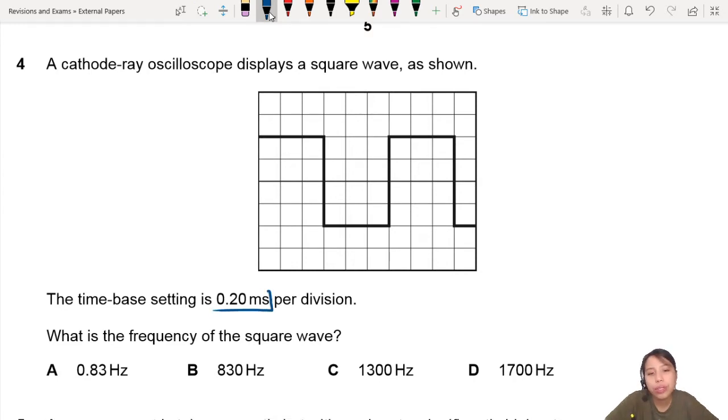This 0.2 millisecond tells you how much one box is per division. So each box is 0.2 millisecond. That's just what they're telling you.